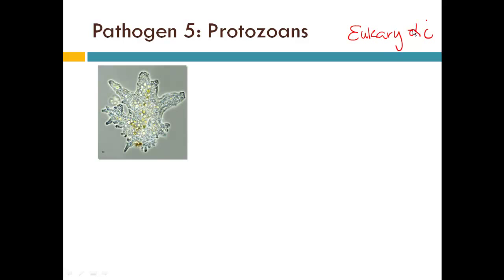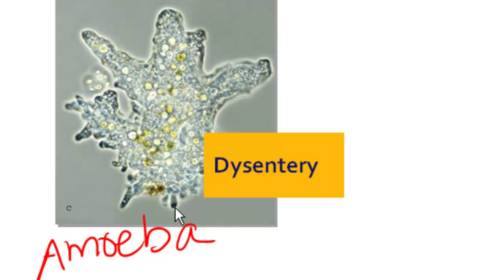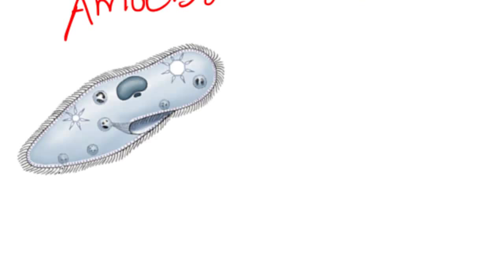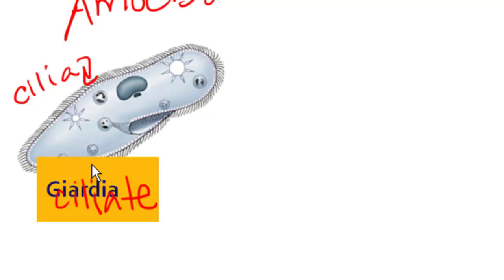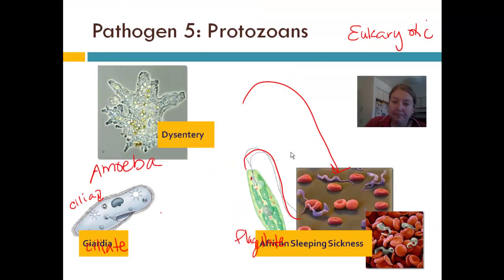Here is an example of a protozoan: this is an amoeba, and one of the diseases it can cause is dysentery, an intestinal infection. Below that is another type of protist — notice they have little hairs called cilia, so this is a ciliate. A disease it can cause is giardia, another intestinal disease. A third type of protozoan is called a flagellate because it has flagella — in this case it has two. A disease this one causes is African sleeping sickness, and it can also cause malaria.